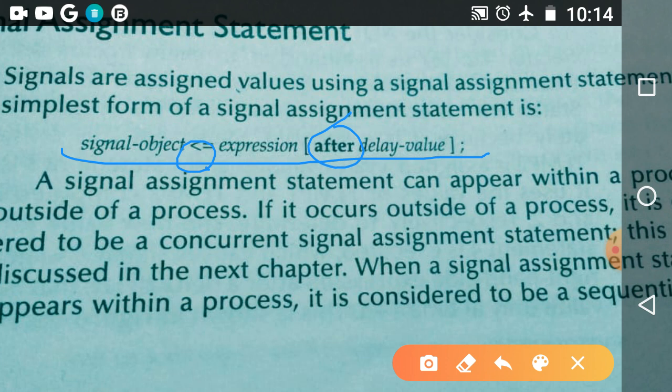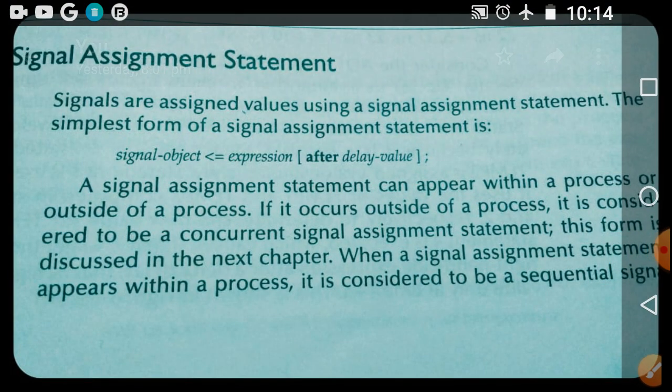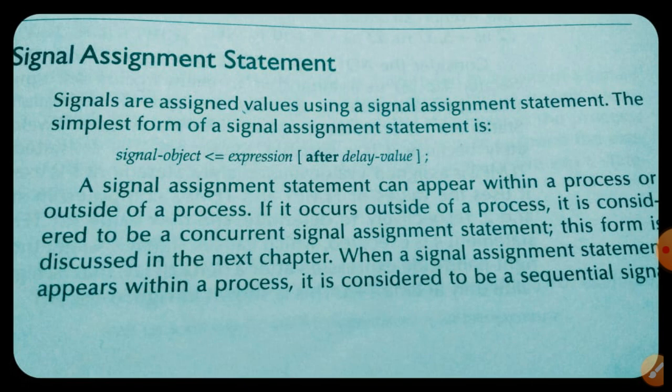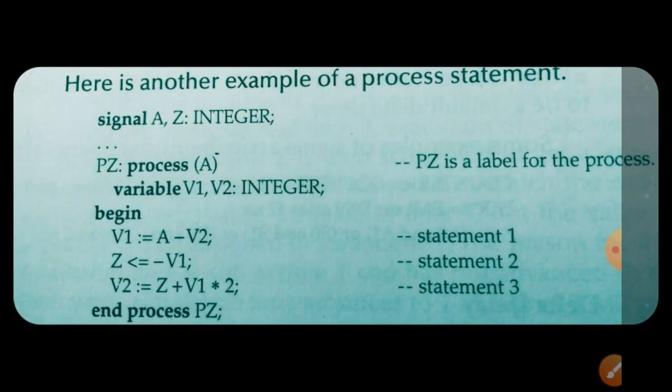Another important point about the signal assignment statement is that we can use it in two ways. One way is inside the process statement, another way is outside the process statement. If the signal assignment statement appears inside the process statement, it is called a sequential signal assignment statement. If it appears outside the process statement, it is called a concurrent signal assignment statement.